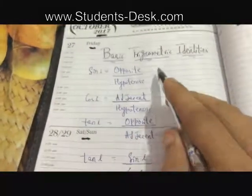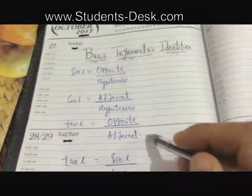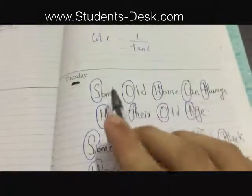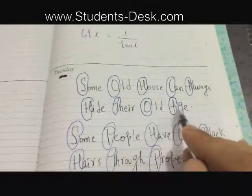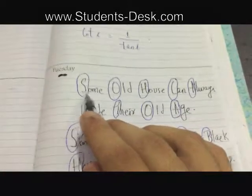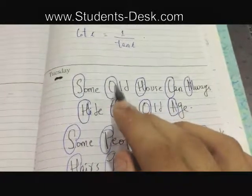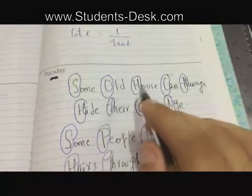There are easy ways to remember these three identities by remembering these words. Some old house can always hide their old age, where S of some represents sin, O of old represents opposite, H represents hypotenuse.